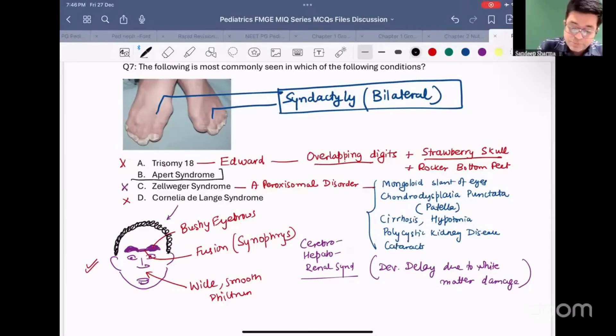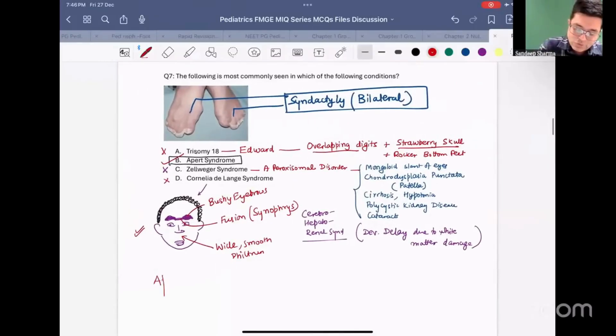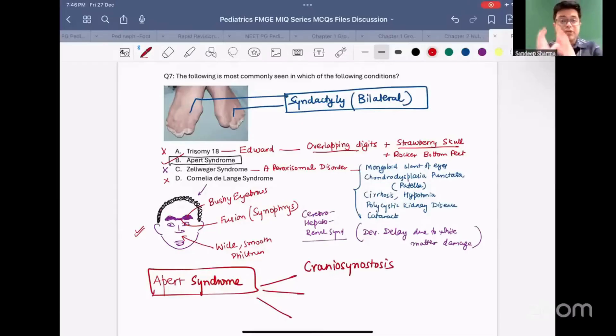What are we left with? Apert syndrome. And Apert syndrome is the correct answer to this question. What is Apert syndrome? Remember that Apert syndrome is a syndrome which is characterized by a triad of three things. These patients have craniosynostosis. What is craniosynostosis? Premature fusion of the skull suture.